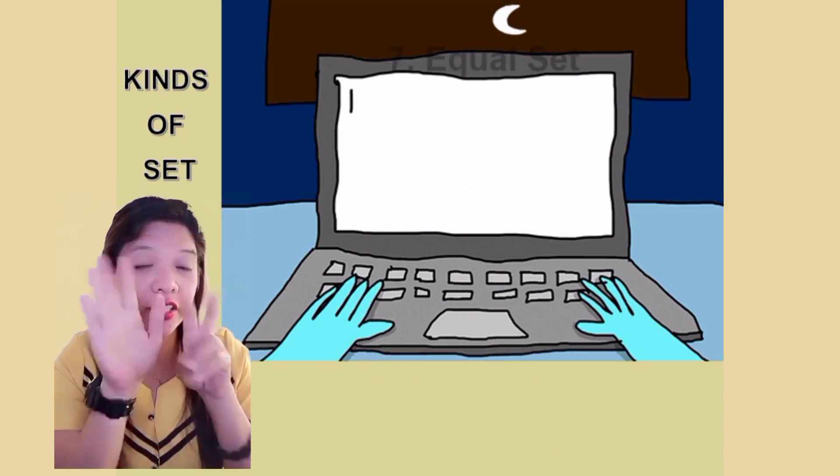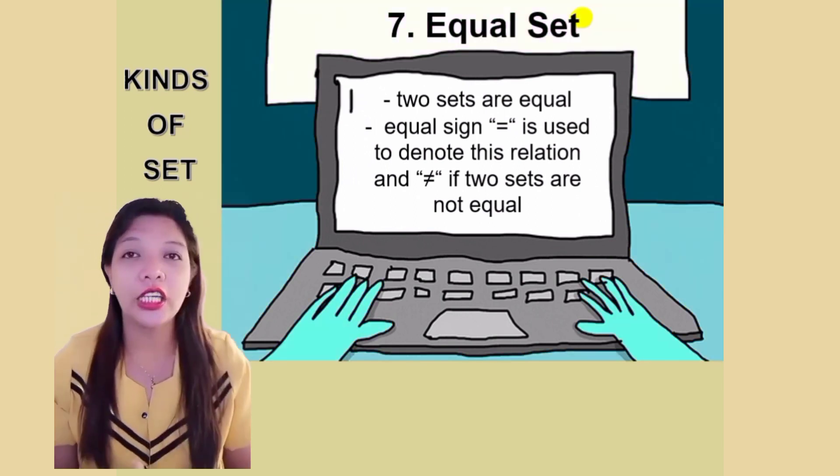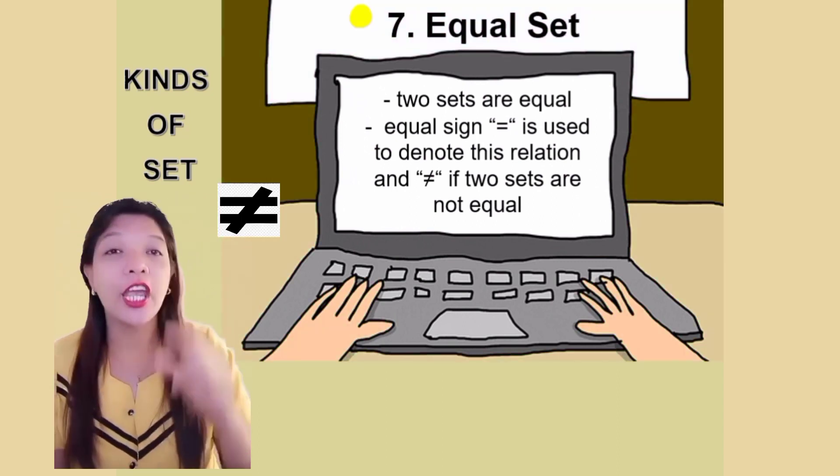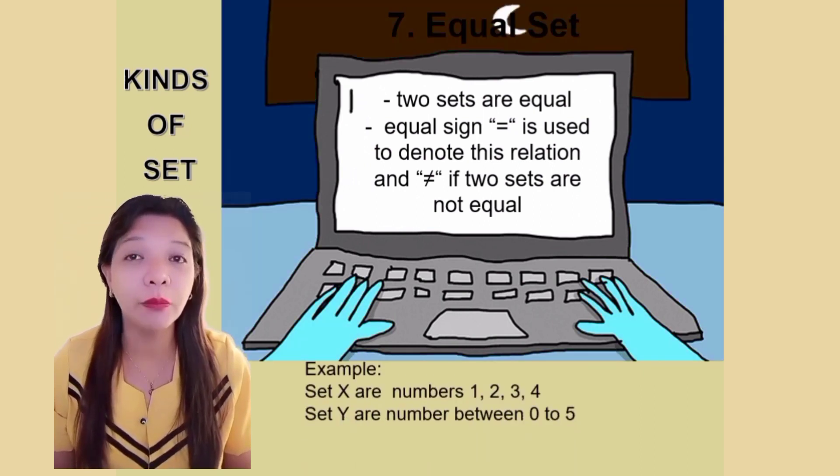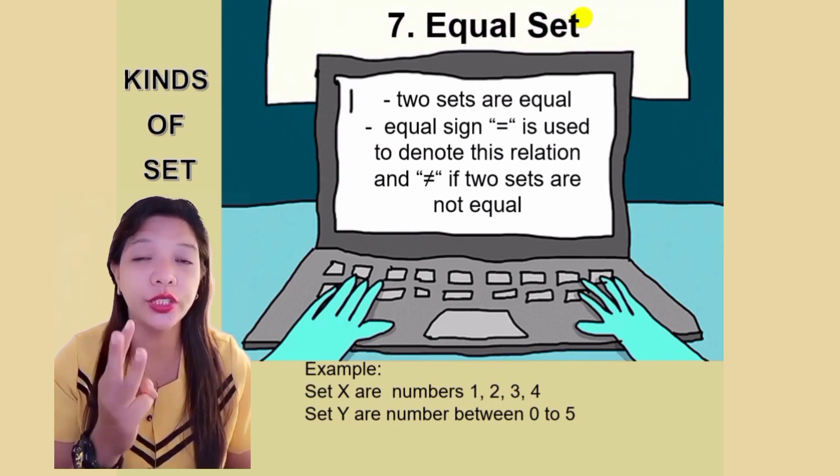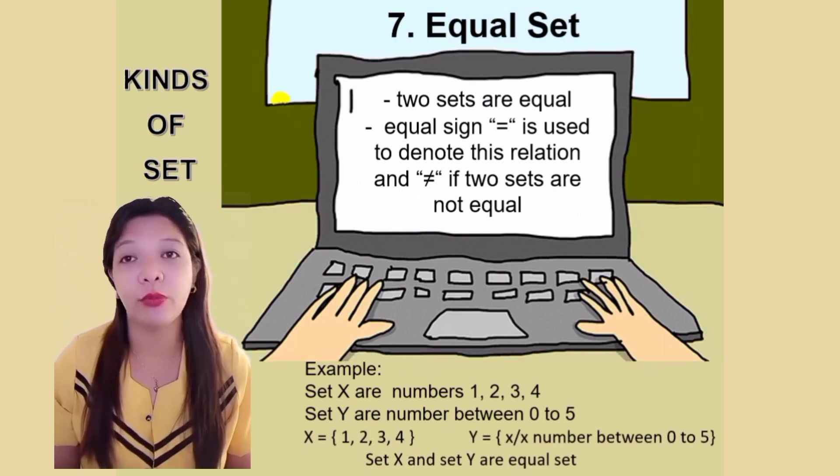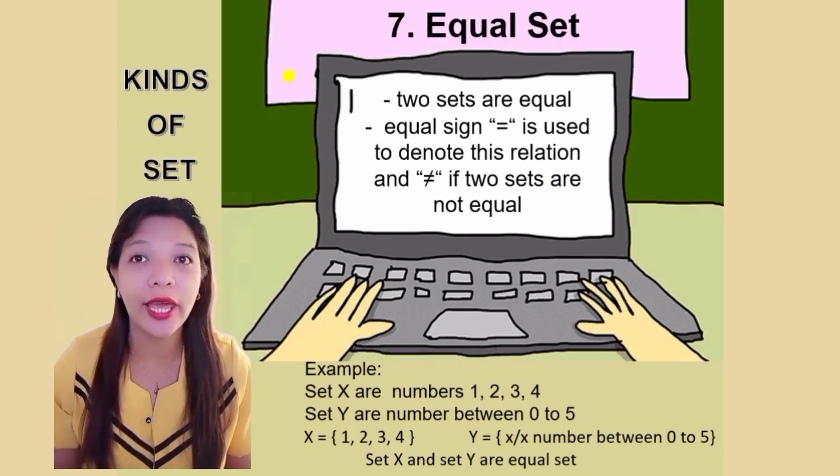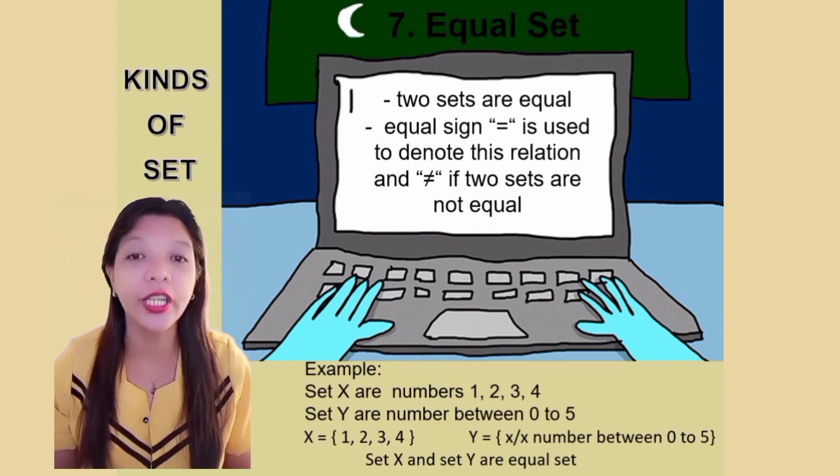Number seven. Equal sets. Two sets are equal. Equal sign is used to denote this relation and not equal sign if two sets are not equal. Let's have our example. Set X are numbers 1, 2, 3, 4. And set Y are numbers between 0 to 5. Set X is equal to open brace 1, 2, 3, 4, close brace. While Y is equal to X such that X numbers between 0 to 5. Set X and Set Y are equal set.